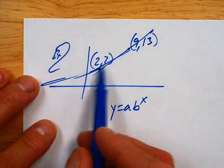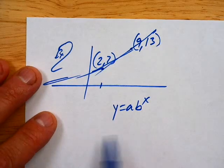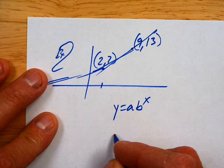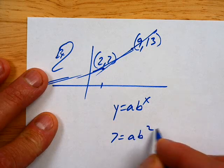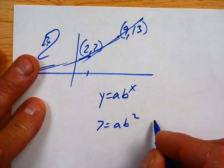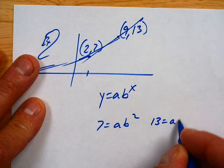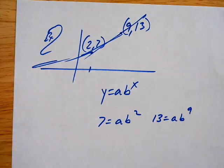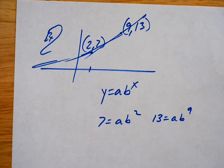What can I do with the 2 and the 7? Put them in for x and y. And then I've got this other equation, 13 equals a b to the 9th. So now we've got this situation and now we've got to think about how we're going to solve this system.